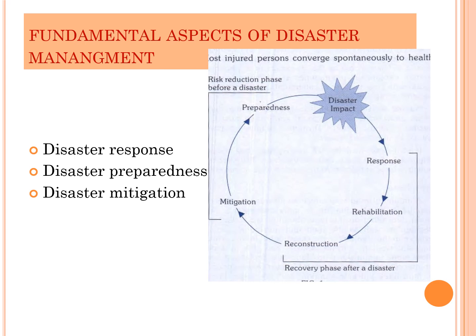There are three fundamental aspects of disaster management. Disaster preparedness and mitigation are activities before a disaster occurs — we should be prepared and prevent the disaster. Response covers activities following the disaster. These represent the before and after phases of disaster management.